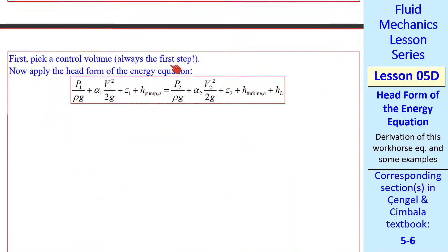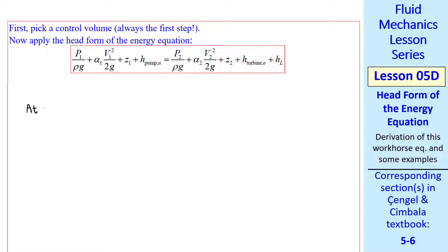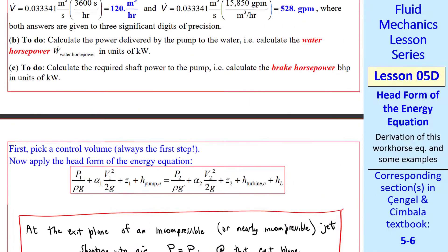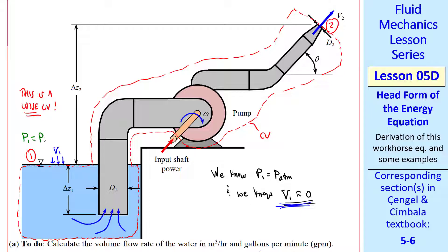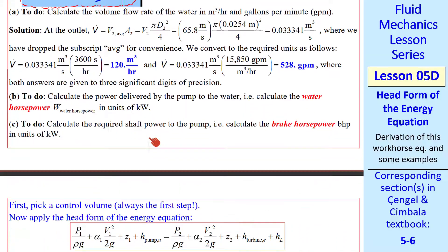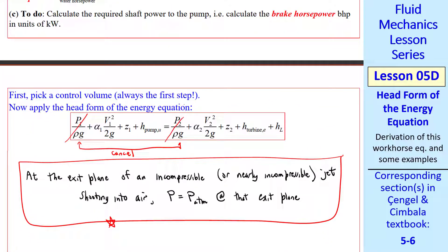So now let's go back to our energy equation in head form using this control volume that we defined. Here's another useful bit of information. At the exit plane of an incompressible or even nearly incompressible jet shooting into the air, P equal P atmosphere at that exit plane. You'll find this to be very valuable information for many problems that we do. So looking again at our control volume, we know that P1 equal P atmosphere and now we know that P2 is also equal to P atmosphere since it is a jet exiting into air and water is nearly incompressible. As discussed previously, this atmospheric pressure is slightly lower than this atmospheric pressure. Those effects are totally negligible since water has such a higher density than air. So we'll ignore that.